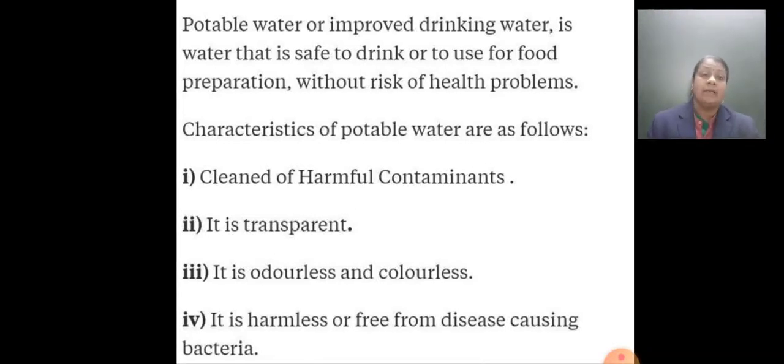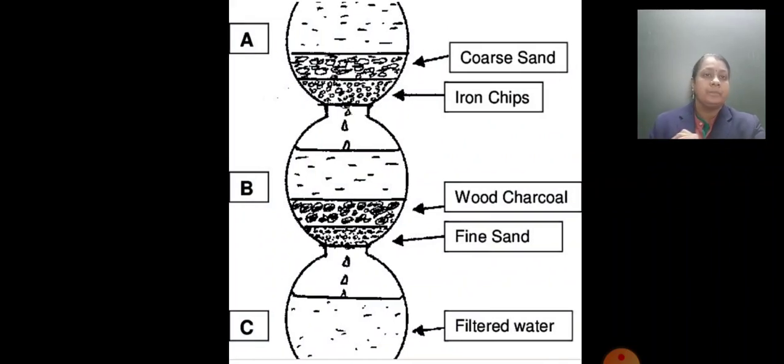Now what are the characteristics of potable water? First, cleaned of harmful contaminants. It should be transparent, odorless, colorless. It is harmless or free from disease-causing bacteria. So this is the characteristic feature of potable water. It is odorless means it does not have any smell. It does not have any color. Transparent and free from disease-causing bacteria.